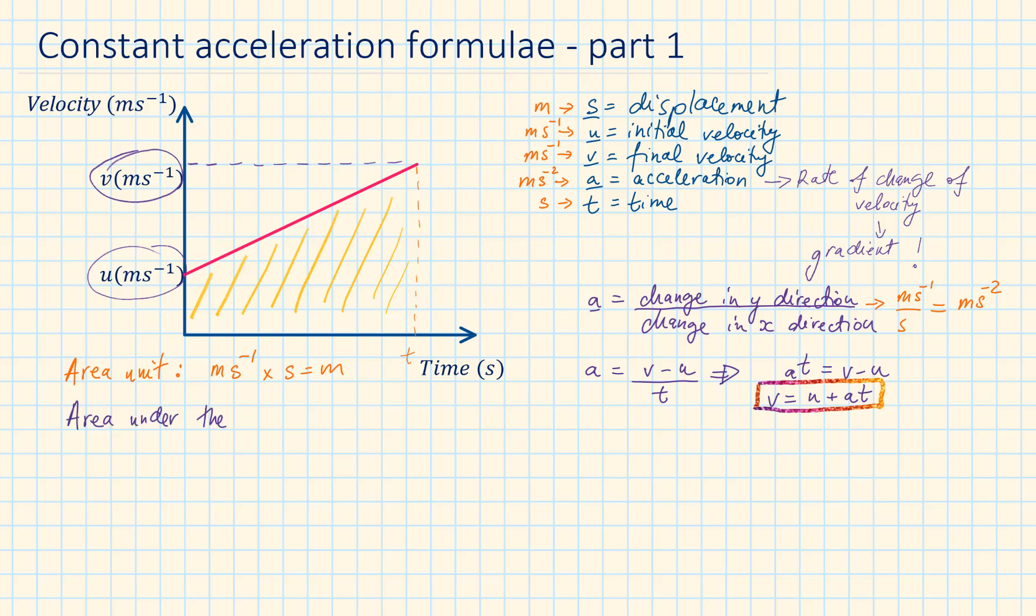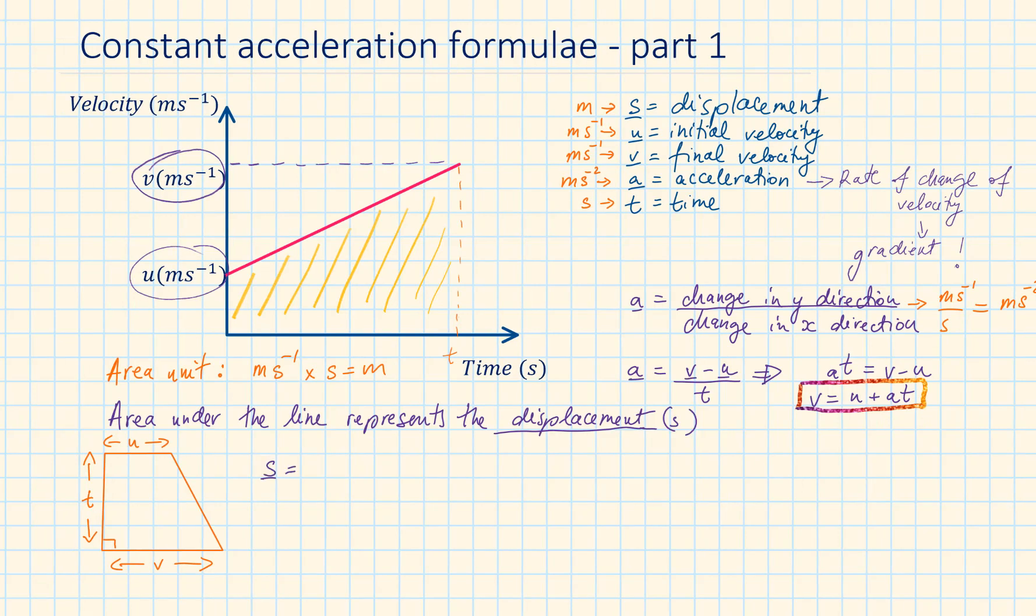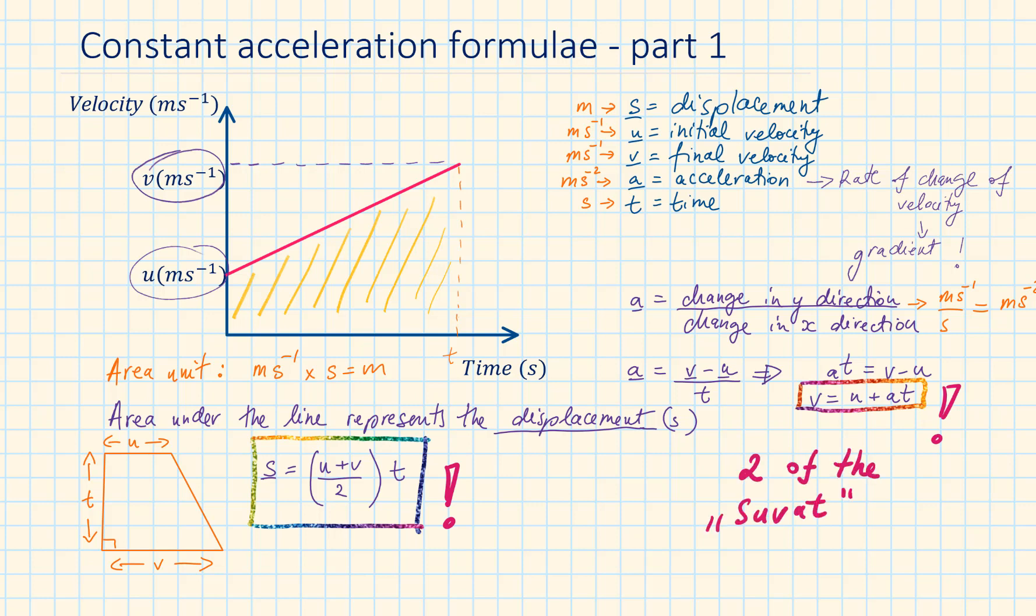The area under the line, which is in the shape of a trapezium, represents the displacement. The formula of a trapezium is the average of the two parallel sides times by the perpendicular height: U plus V over 2 times T. This is another of our SUVAT formulae. You must know how to derive these two SUVAT formulae in an exam.